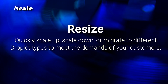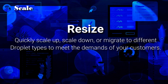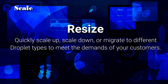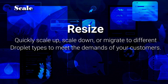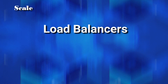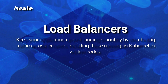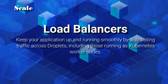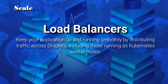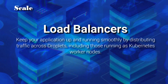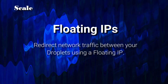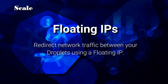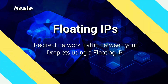Scale and resize: quickly scale up, scale down, or migrate to different droplet types to meet the demands of your customers. Load balancers: keep your application up and running smoothly by distributing traffic across droplets, including those running as Kubernetes worker nodes. Floating IPs: redirect network traffic between your droplets using a floating IP.